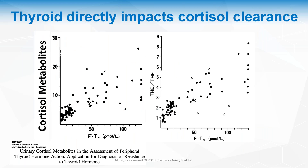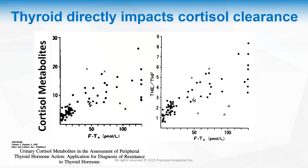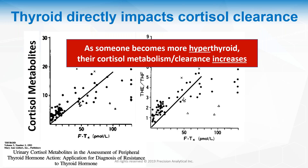Let's look at how thyroid directly impacts cortisol clearance. If someone becomes more hypothyroid, their cortisol clearance decreases — everything slows down: hair growth, metabolism, digestion causing constipation, and therefore cortisol production and metabolism. With hyperthyroidism, everything increases: metabolism, digestion (sometimes causing diarrhea), sebum production, and so cortisol production and clearance increase as well.